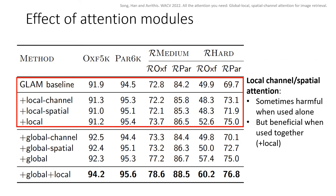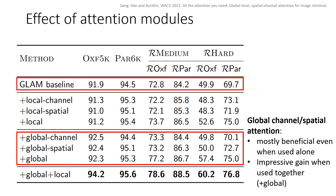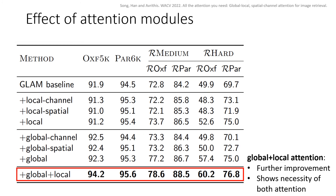We evaluated the effect of local and global attention modules, each with either channel or spatial attention or both. The first row is a GLAM baseline without attention. Looking at the effect of local attention: if only one of the channel or spatial attention is used, it is sometimes harmful, but it is beneficial when both channel and spatial are used. Global attention was a little different from local attention — it is almost always beneficial even if only one of channel or spatial attention is used. When they are used together, the gain from global attention is impressively high. The last row shows our best model with both global and local attention, which clearly shows further improvements and the necessity of both types of attention.